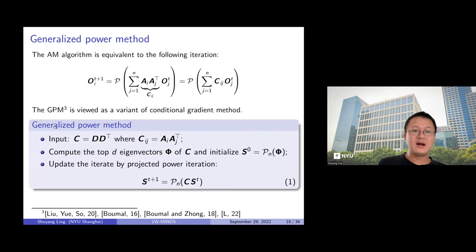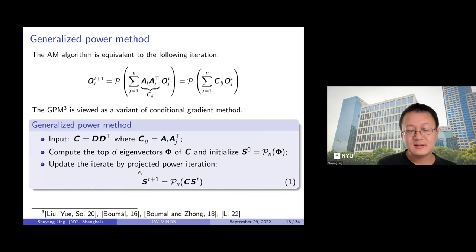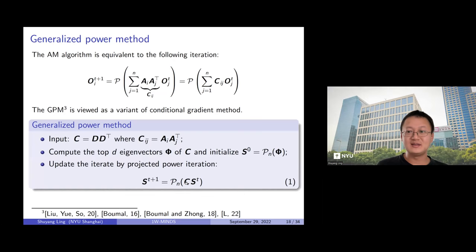To summarize the algorithm: the input is C = D D^T, where C_{ij} is the cross-covariance. Initialize by computing the top-d left singular vectors of D, rounding each block to an orthogonal matrix. Then iteratively apply the projected power method: S_{t+1} = P_{orth}(C S_t). This is called the power method because it resembles the power method for eigenvalue problems, but with projection at each iteration to enforce the orthogonal constraint.